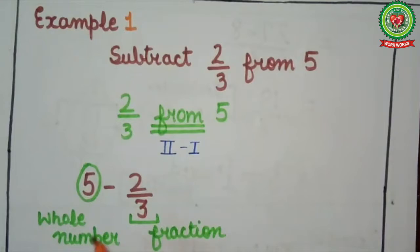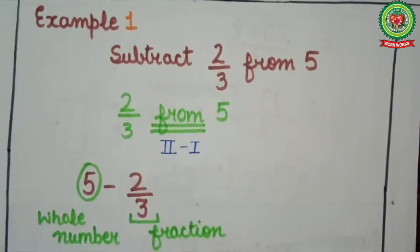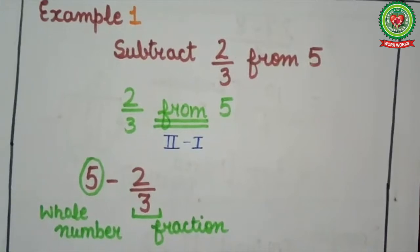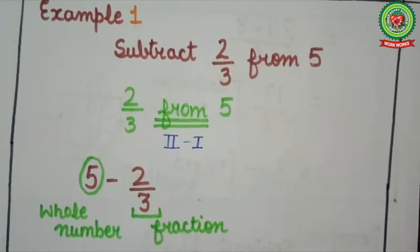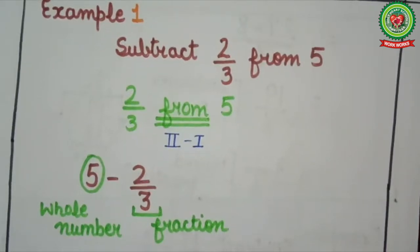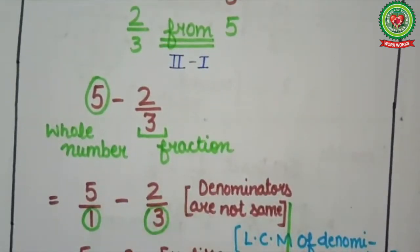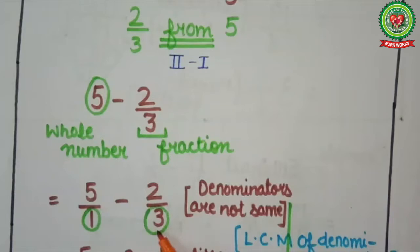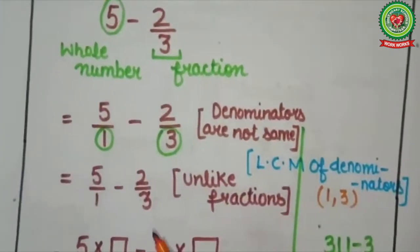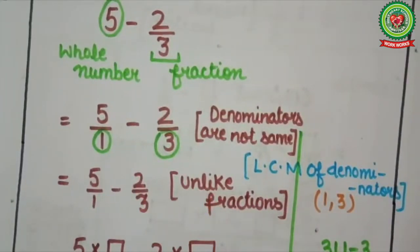Here 5 is a whole number and 2 upon 3 is a fraction. Step 1: change the whole number into a fraction. So if I write 1 in the denominator, at the place of 5, it will become 5 upon 1. Now it will come 5 upon 1 minus 2 upon 3. Next step: check the denominators. Here the denominators are 1 and 3. As the denominators are not the same, therefore these are unlike fractions.